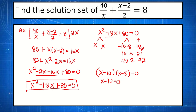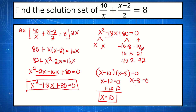We have x minus 10 equals 0; adding positive 10 to both sides, we get x equals 10. The other factor: x minus 8 equals 0; adding 8 to both sides, we get x equals positive 8. These are now the roots of the quadratic equation x squared minus 18x plus 80 equals 0.